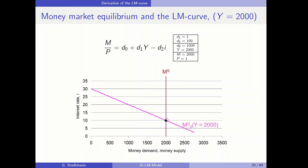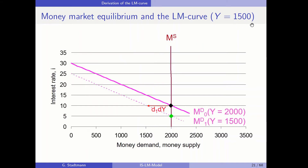In the first scenario, the equilibrium interest rate is equal to 10% — the black scenario, where GDP equals 2000. Now we vary GDP. If GDP decreases to 1500, money demand also decreases, the money demand curve shifts to the left, and the new equilibrium is found at the green dot. When the GDP level is at 1500, the corresponding equilibrium interest rate is equal to 5.